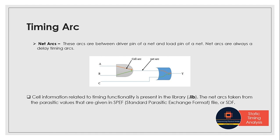Net arcs are between the driver — that is, the cell pin of a net — and the load pin of a net. The source pin is the output pin of the first cell and the sink pin is the input pin of another cell. For example, in a timing path with an AND gate followed by an OR gate, the timing within each cell is represented as a cell arc.